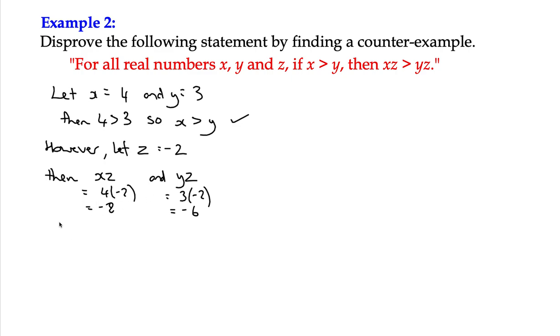And here we can say that -8 is less than -6. In other words, we've shown that xz is less than yz, which is the opposite of what the conjecture says. This is a counter-example.